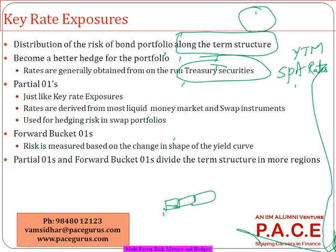For the computation of spot rates, we use on-the-run treasury securities — those are very recently issued and very actively traded securities. From those security prices we derive the spot rates. If I vary those spot rates by one basis point and find out the change in the price of the bond, I am calling that key rate 0.1. And if I find the duration associated with just changing only the two-year spot rate, keeping all other rates unchanged, I call that the key rate duration for that specific maturity.